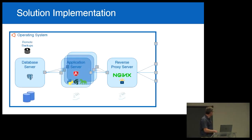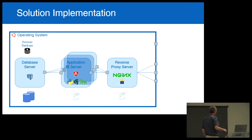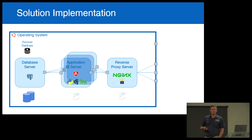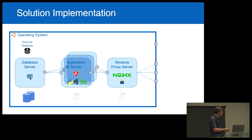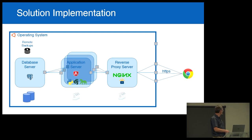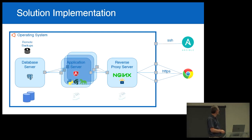What does the system look like after Ansible is done with it? We've got the database server — all of these are Docker containers. We can have any number of application server containers depending on how much the hardware can carry. Then we have Nginx as the reverse proxy, and each application server has a unique external port through which we route clients. With your browser you connect to the correct port and that routes you through to that application server. And of course Ansible is still in the game via SSH.